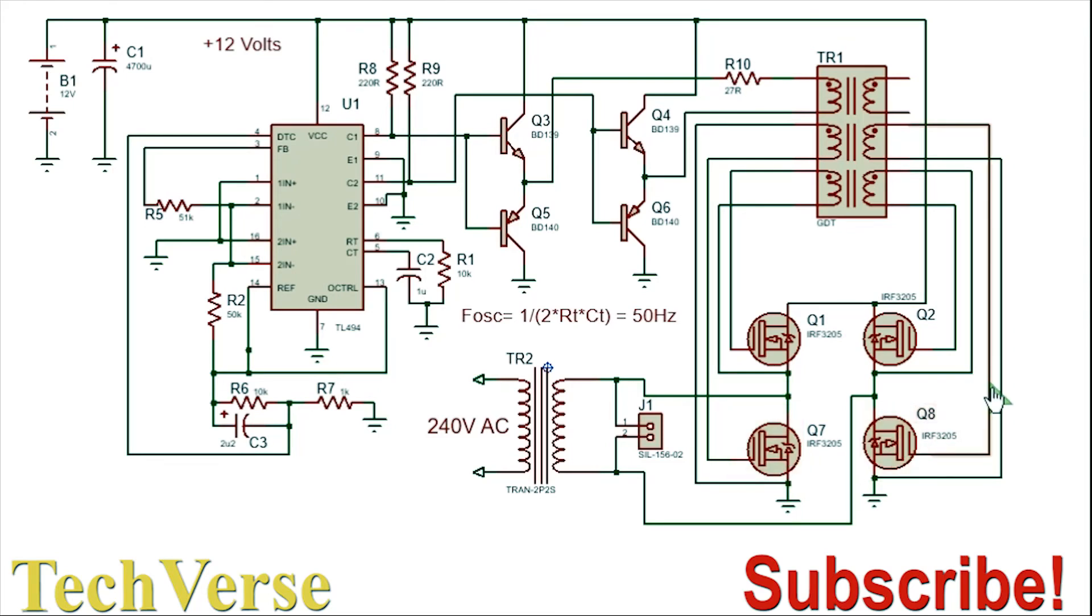So this will cause a complete full H-bridge signal to be applied on the primary of the transformer, and this will be swinging back and forth at 50 hertz. And so with the primary, then with the appropriate turns on the secondary, you can obtain about 240 volts AC. You can even get 120 volts AC depending on the parameters of the transformer.